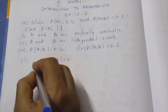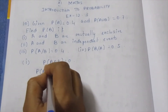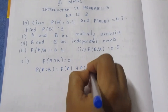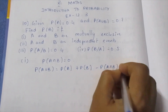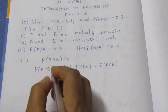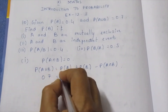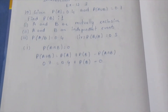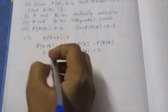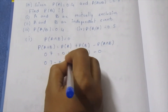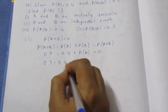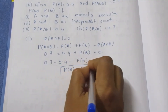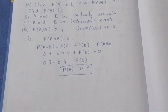Using the formula P(A∪B) = P(A) + P(B) − P(A∩B), and substituting P(A∩B) = 0, we get 0.7 = 0.4 + P(B) − 0, which gives P(B) equal to 0.7 minus 0.4, so P(B) = 0.3.